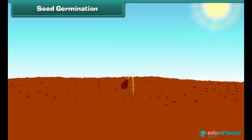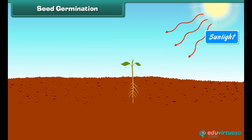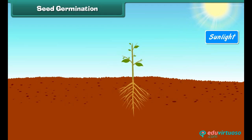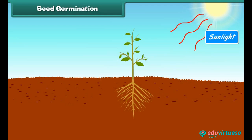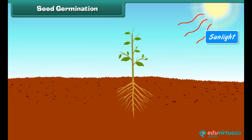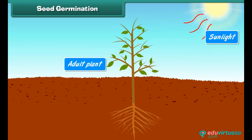After that, the shoot germinates upwards towards sunlight, and then leaves start growing on the shoot. The young plant is called a seedling, which grows into an adult plant.